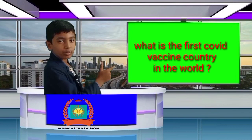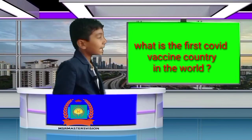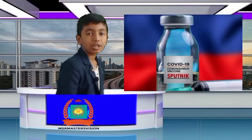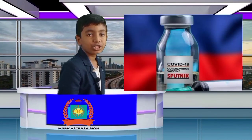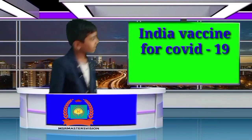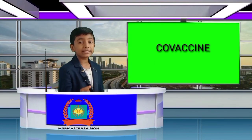What is the first COVID vaccine country in the world? Answer is Russia. Vaccine name is Sputnik. India vaccine for COVID-19: answer is Covaxin and Covishield.